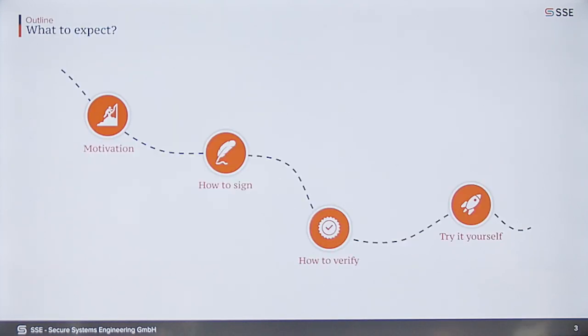So what to expect from this talk? I'm going to give a very short motivation for why we talk about image signatures and why you should care about them, then quickly jump into the two main topics: how do we actually sign container images and how do we verify those signatures within a Kubernetes cluster. At the end, I hope some of you have learned something about signatures and can actually employ them in your own clusters.